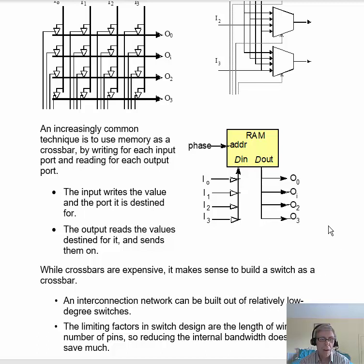I've said that crossbars are expensive, but it does make sense to build a multi-stage switch as a crossbar. An interconnection network, then, can be built out of relatively low-degree switches, and the limiting factor in the design are the length of wires and the number of pins. So it doesn't make much difference if you reduce the internal bandwidth. It doesn't save much.